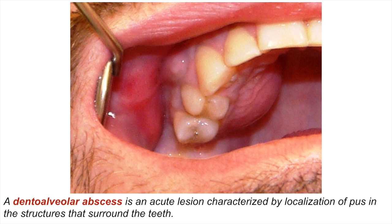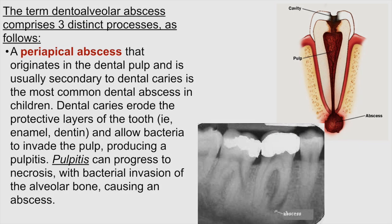A dental alveolar abscess is an acute lesion characterized by localized pus in the structures that surround the tooth. The term dental alveolar abscess comprises three distinct processes. A periapical abscess originates in the dental pulp and is usually secondary to dental caries — it is the most common dental abscess in children. Dental caries erode the protective layers of the tooth, the enamel and the dentin, and allow bacteria to invade the pulp, producing pulpitis. Pulpitis can progress to necrosis with bacterial invasion of the alveolar bone, causing an abscess.